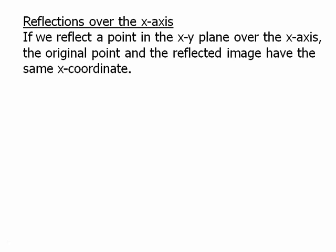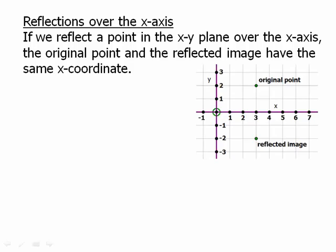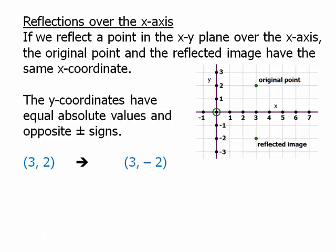Let's talk about reflections over the x-axis. If we reflect a point in the XY plane over the x-axis, the original point and the reflected image will have the same x-coordinate — it will be on the same vertical line. The y-coordinate has equal absolute values and opposite signs. So we just take the y-coordinate: if it's positive we make it negative, if it's negative we make it positive. Very simple.